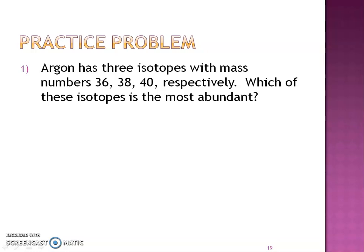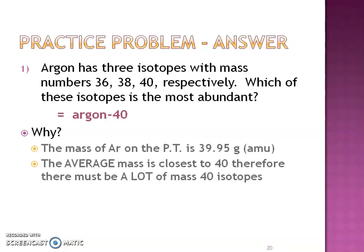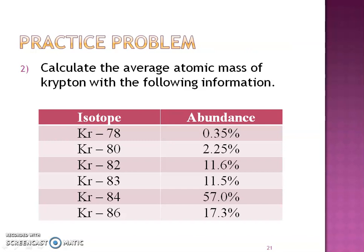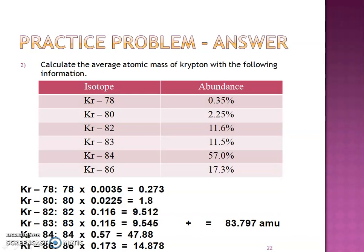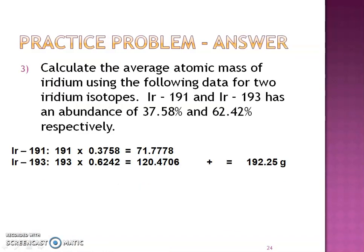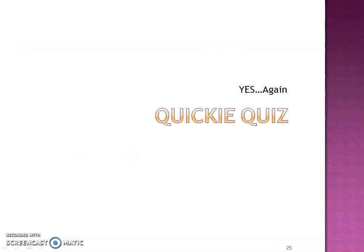So practice problem one. Hopefully that makes sense. Did you come up with that? Hopefully that makes sense. Number two. I gave you a lot of work here. And does this make sense? It's 83.8. So if I look here, my abundance - look at this, 57% is 84, and it's closest to 84. That looks good. How about number three? Hopefully you got that as an answer. Again, grams or AMU, I'm happy with. And let's see here, checkpoint. We have more 193s than 191s, and this is closer to 193 than it is 191. All right, here you go.